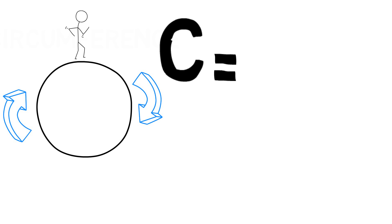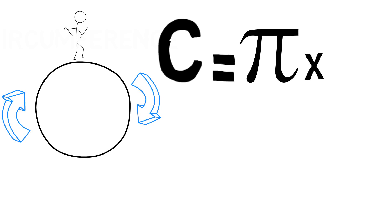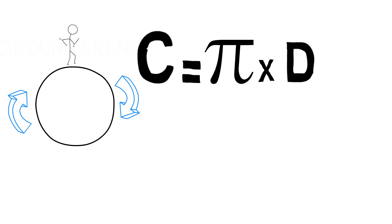Let's now see the formula to calculate the circumference. Here it is. Circumference is equal to pi times diameter or C is equal to pi times D. Great.